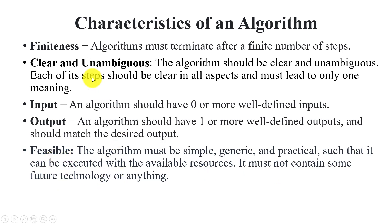These are all the characteristics of algorithm. So, algorithm is nothing but a set of instructions which follow finite steps, and the correct characteristics are finiteness, clear, unambiguous, input, output, and feasible. Thank you.